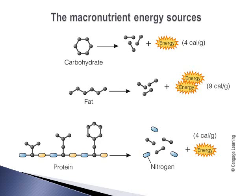Here you can see the differences between macronutrient energy sources. Carbohydrate provides four calories per gram. Fat — with its glycerol backbone and fatty acids — provides nine calories per gram, making it very energy dense. Protein, which is distinguished by containing nitrogen, also provides four calories per gram, the same amount as carbohydrate.